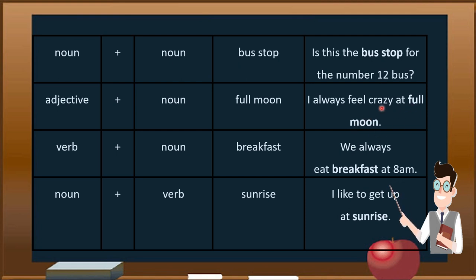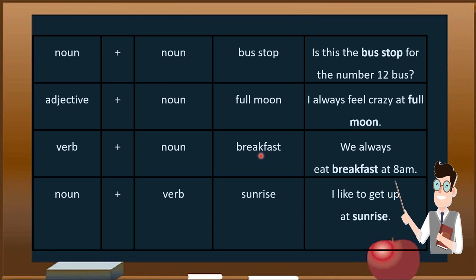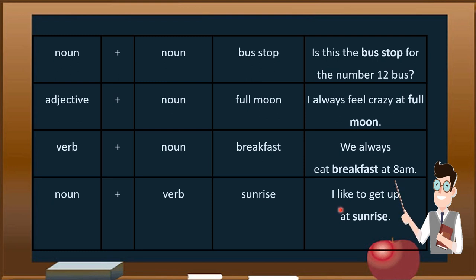The next combination is verb plus noun, like 'breakfast' — where 'break' is a verb and 'fast' is a noun. 'Breakfast' is a solid compound noun. Example: 'We always eat breakfast at 8 AM' — here 'breakfast' functions as the object. Next is noun plus verb: 'sunrise' — 'sun' is a noun and 'rise' is a verb — written with no hyphen or space. Example: 'I like to get up at sunrise' — 'sunrise' is the complement.